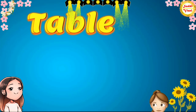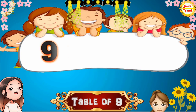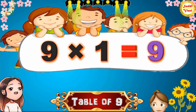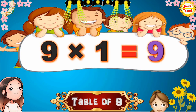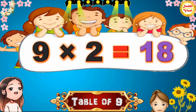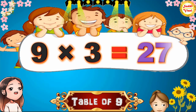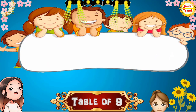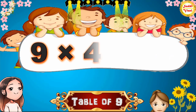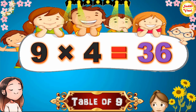Hello children, we will learn table of 9. 9 × 1 = 9, 9 × 2 = 18, 9 × 3 = 27, 9 × 4 = 36.